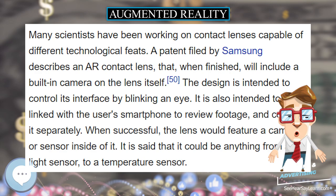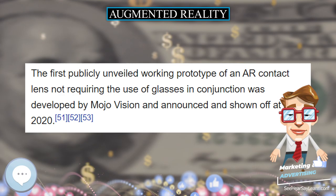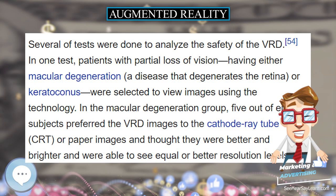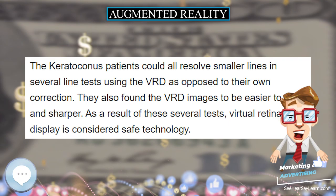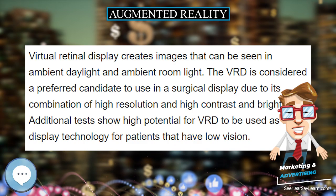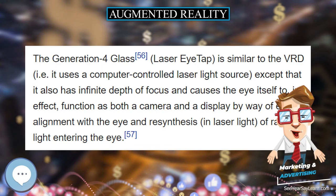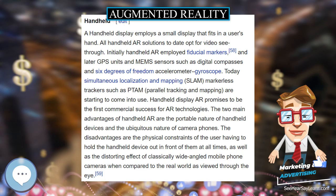Projectors can also be used to display AR contents. The projector can throw a virtual object on a projection screen and the viewer can interact with this virtual object. Projection surfaces can be many objects such as walls or glass panes. A key measure of AR systems is how realistically they integrate augmentations with the real world. The software must derive real-world coordinates, independent of camera and camera images. That process is called image registration and uses different methods of computer vision, mostly related to video tracking. Many computer vision methods of augmented reality are inherited from visual odometry.